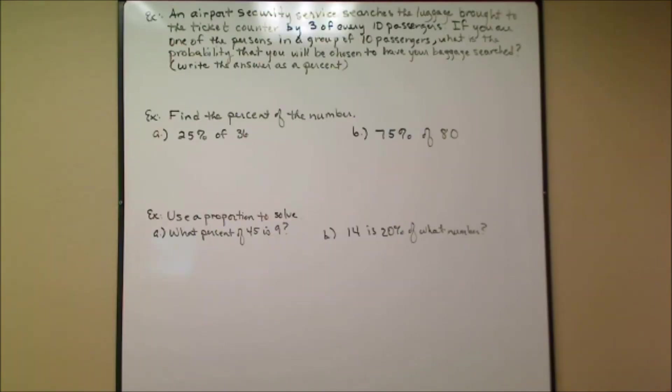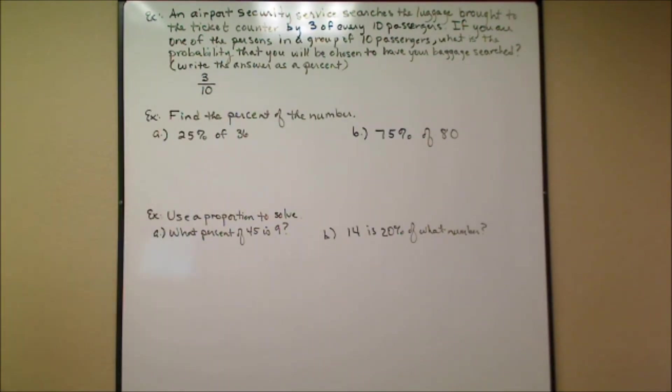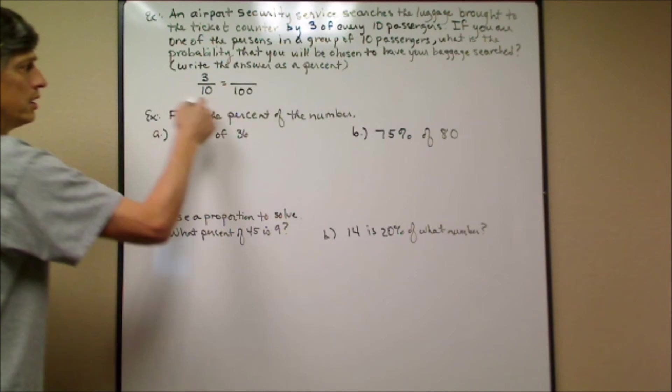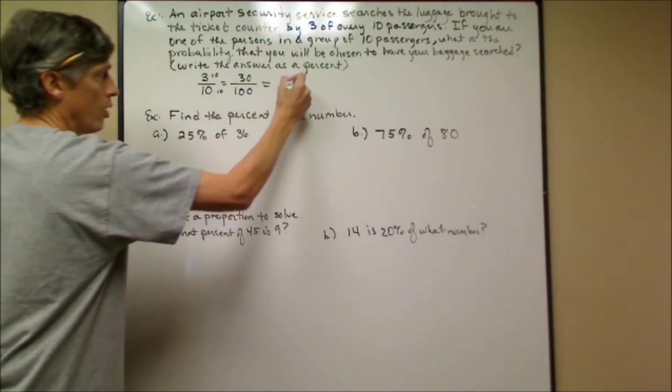Let's consider an airport security service that searches the luggage brought to ticket counters by 3 out of every 10 passengers. If you're one of the persons in a group of 10 passengers, what is the probability that you will be chosen to have your baggage searched? We're going to write the answer as a percent. The probability that we're going to be searched is 3 out of 10. That would be the experimental probability, but they want it as a percent. So 10 times 10 is 100; times 10 is 30. So it's 30 out of 100, or 30%.